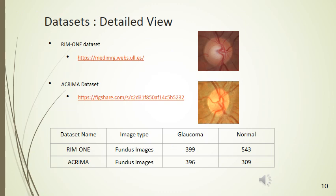For this experiment we have used two different datasets, namely RIM1 and ACRIMA. RIM1 includes a total of 942 images and ACRIMA includes a total of 700 labeled images.